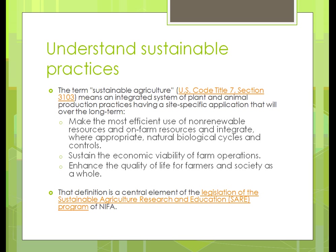Another definition focuses on making the most efficient use of non-renewable and on-farm resources, and integrating where appropriate natural biological cycles and controls. Basically that means use less energy to produce the crop — we've become very mechanized and should try to become less so. We also need to sustain the economic viability of farm operations and enhance the quality of life for farmers and society. For example, if nitrogen were naturally present in the soil, we wouldn't have to add it synthetically, saving a lot of oil.